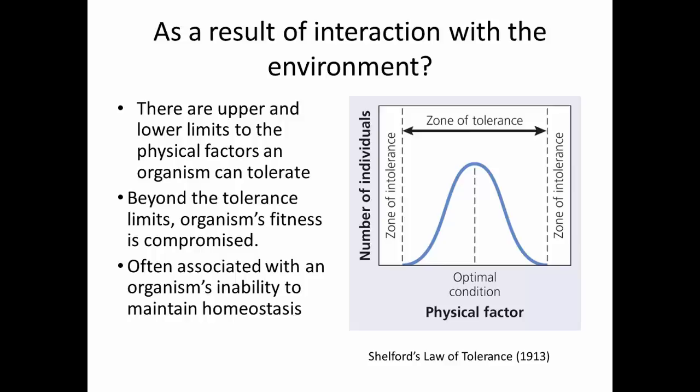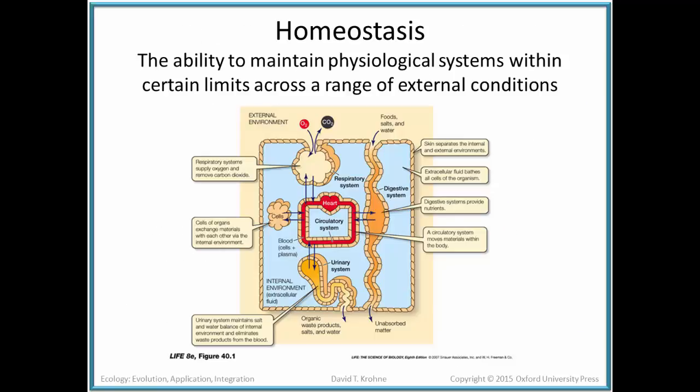Eventually, you reach a point of no tolerance or intolerance. This zone of tolerance is really associated with the organism's ability or inability to maintain homeostasis — the ability of an organism to maintain physiological systems within certain limits across a wide range of external conditions. For homeostasis to take place, the organism has systems like the respiratory system, urinary system, skin, digestive systems, and the circulatory system, which help maintain the internal environment more or less independent of the external environment. The external environment certainly is going to affect the ability of an organism to maintain internal homeostasis.